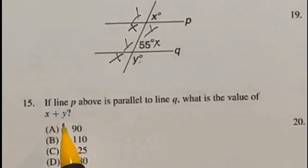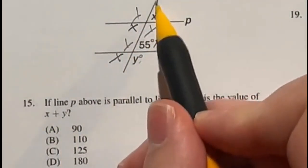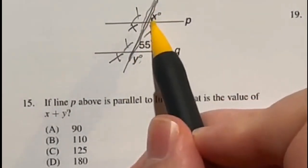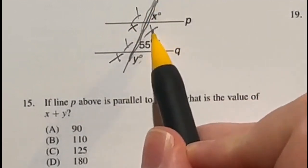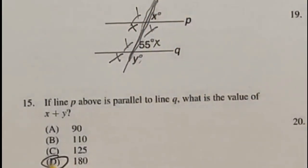So it says here, what's the value of x plus y? Well, if you notice, this is a straight line right here, which means it's 180 degrees on each side, making a full 360. So x plus y is always 180 degrees in a transversal.